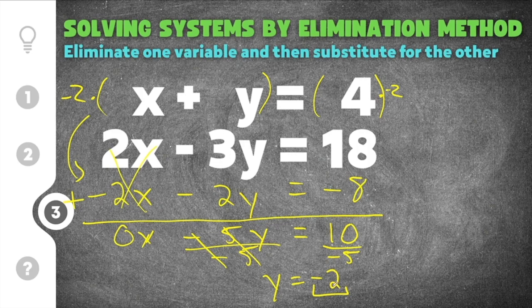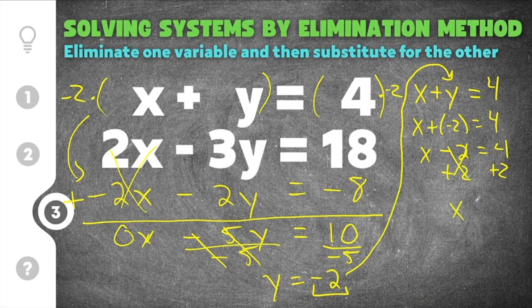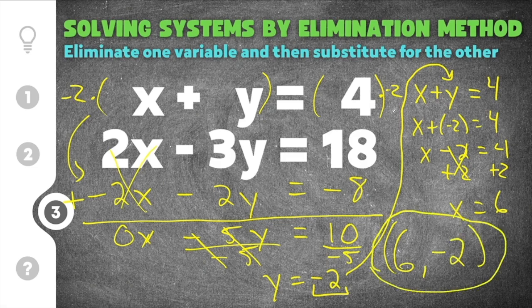Now I can take y equals negative 2 and plug it into the first equation to solve for x. Rewriting the first equation: x plus y equals 4. Substituting in negative 2 for y: x plus negative 2 equals 4, which I can rewrite as x minus 2 equals 4. Adding 2 to both sides, the 2s cancel and we get x equals 4 plus 2, which is 6. So our (x, y) coordinate is (6, negative 2). We solved this system using the elimination method.